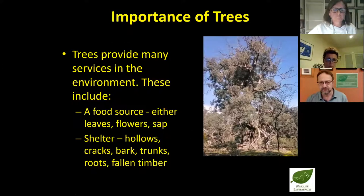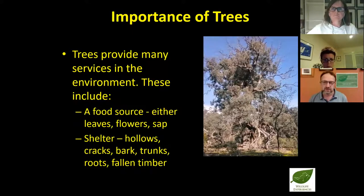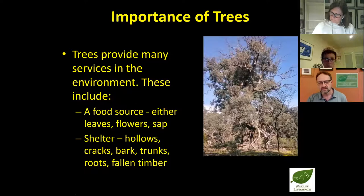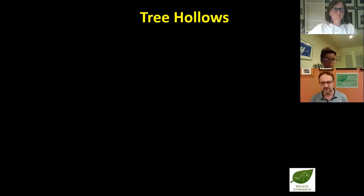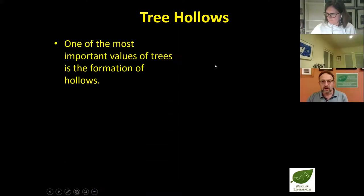Trees also provide shelter — whether it be hollows, cracks in the trunk, bark on the tree or starting to peel off, the trunks themselves, the roots, and fallen timber around the base. And not to forget, probably the most important one: trees along with every other plant sequester carbon dioxide and produce oxygen through photosynthesis, so the rest of us have something to breathe. Tree hollows are probably one of the most important values of a tree.